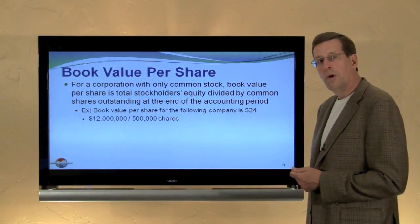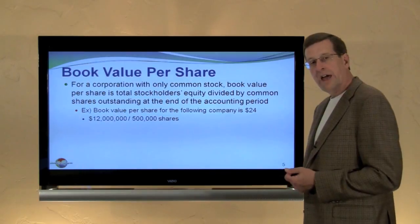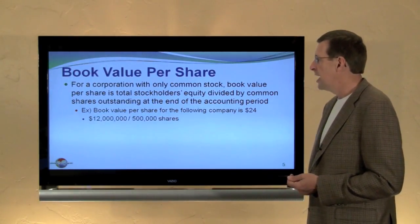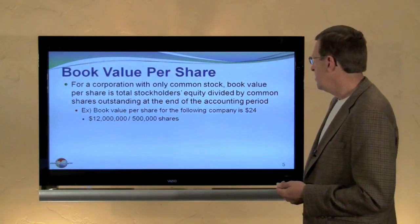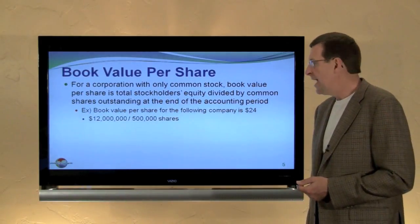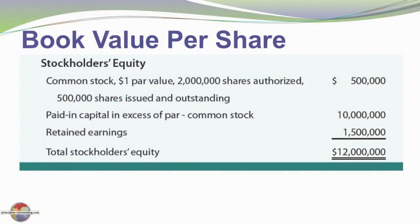For a corporation with only one class of stock — common stock outstanding — the book value per share calculation is straightforward: total stockholders' equity divided by the shares outstanding at the end of the period. For example, here's a company with a book value of $24 per share: $12 million in equity divided by 500,000 shares issued and outstanding gives us that book value per share.